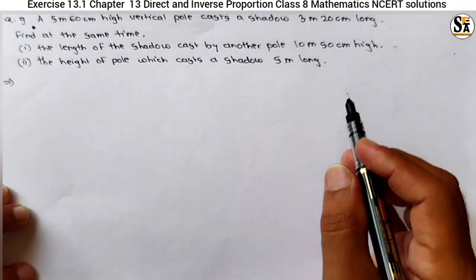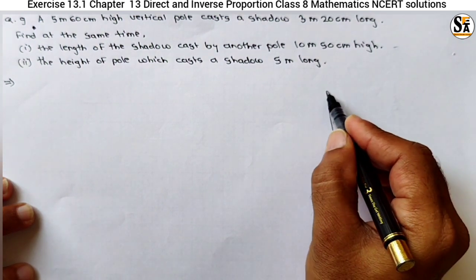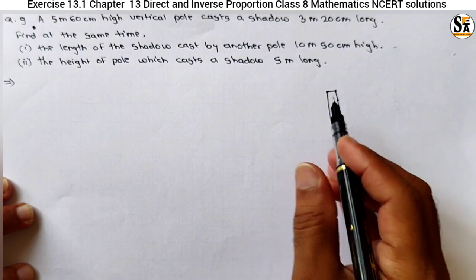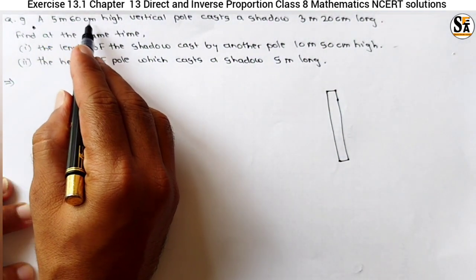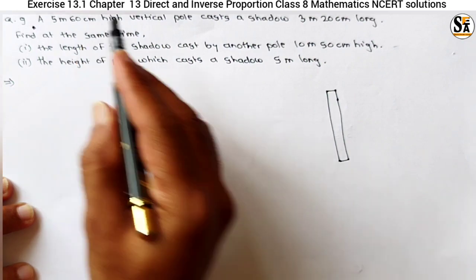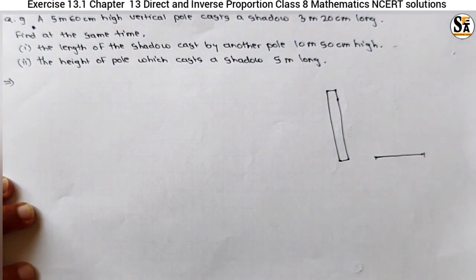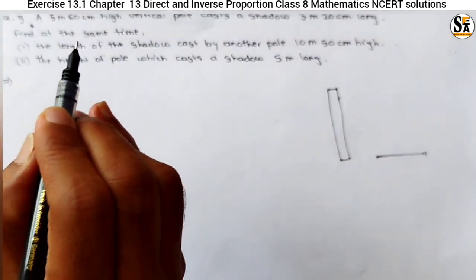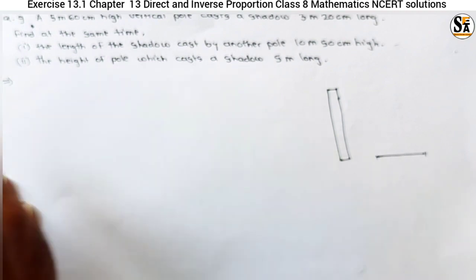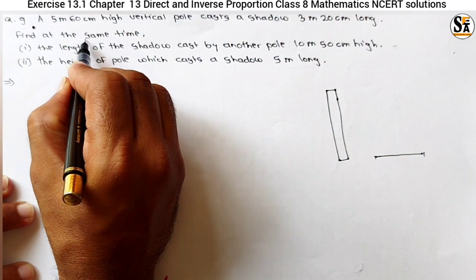I will draw a simple sketch. This is a pole — if this is a pole, it casts a shadow. The shadow is there of this pole. If it is 5m 60cm high, its shadow is 3m 20cm. This word 'same time' is very important, because as time passes there will be no direct proportion.